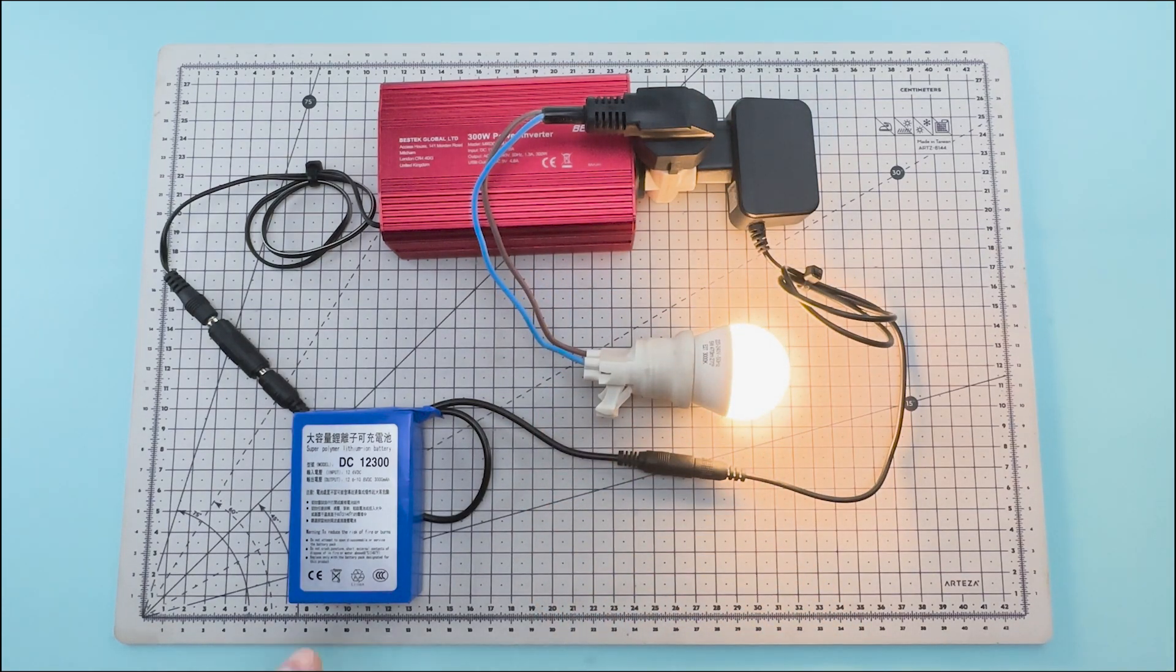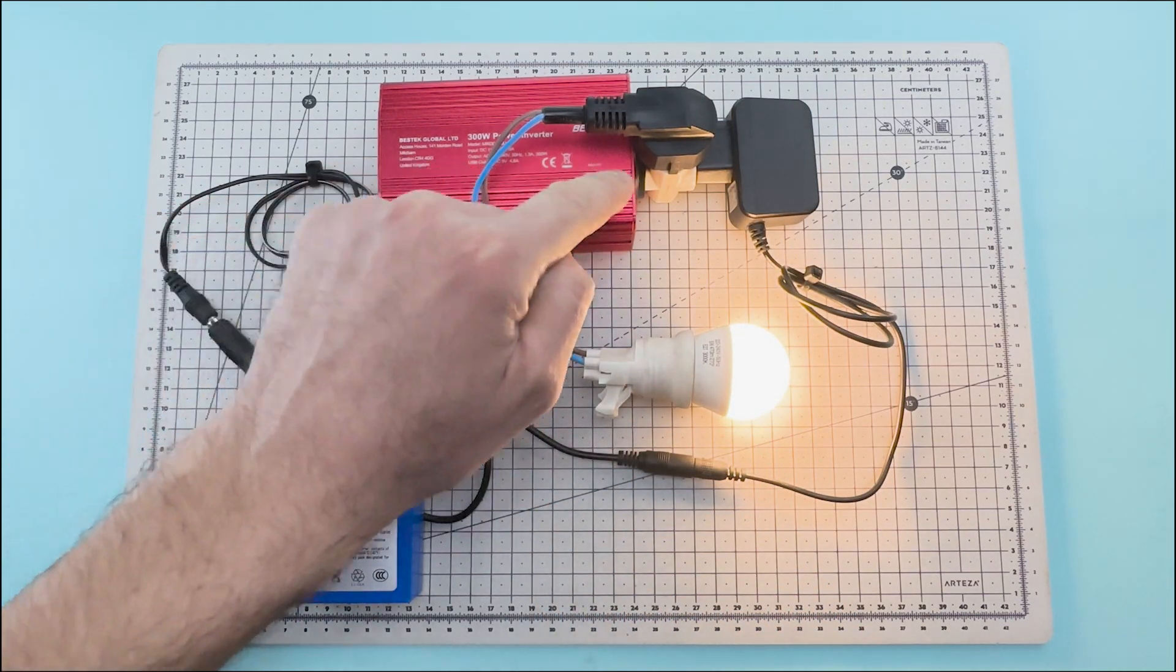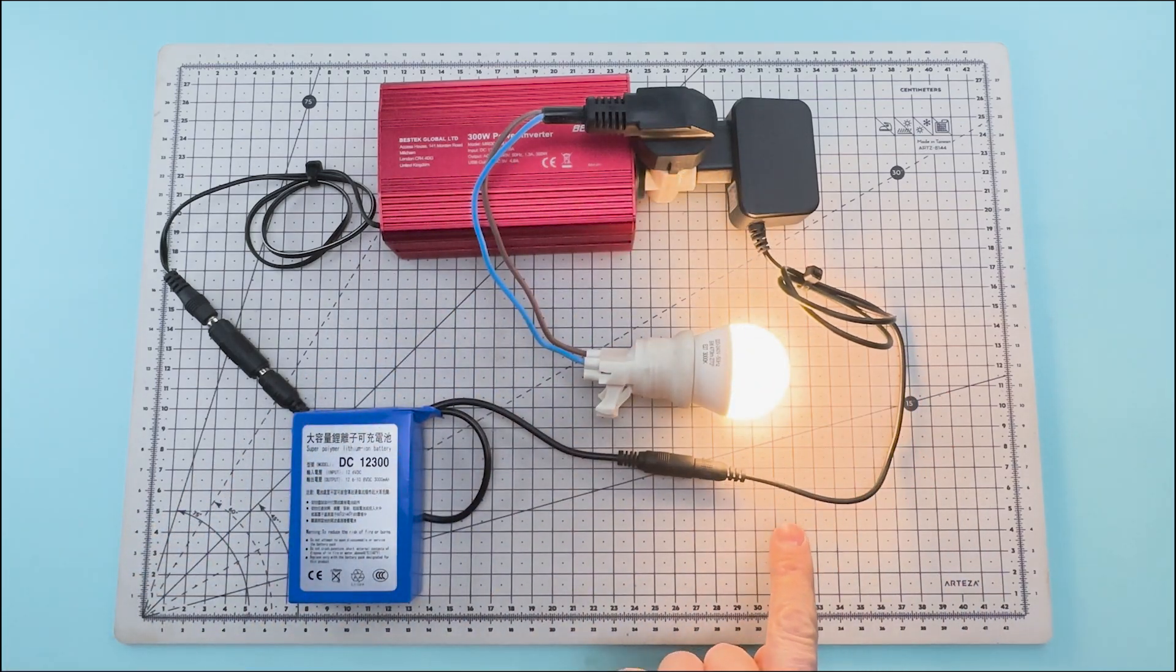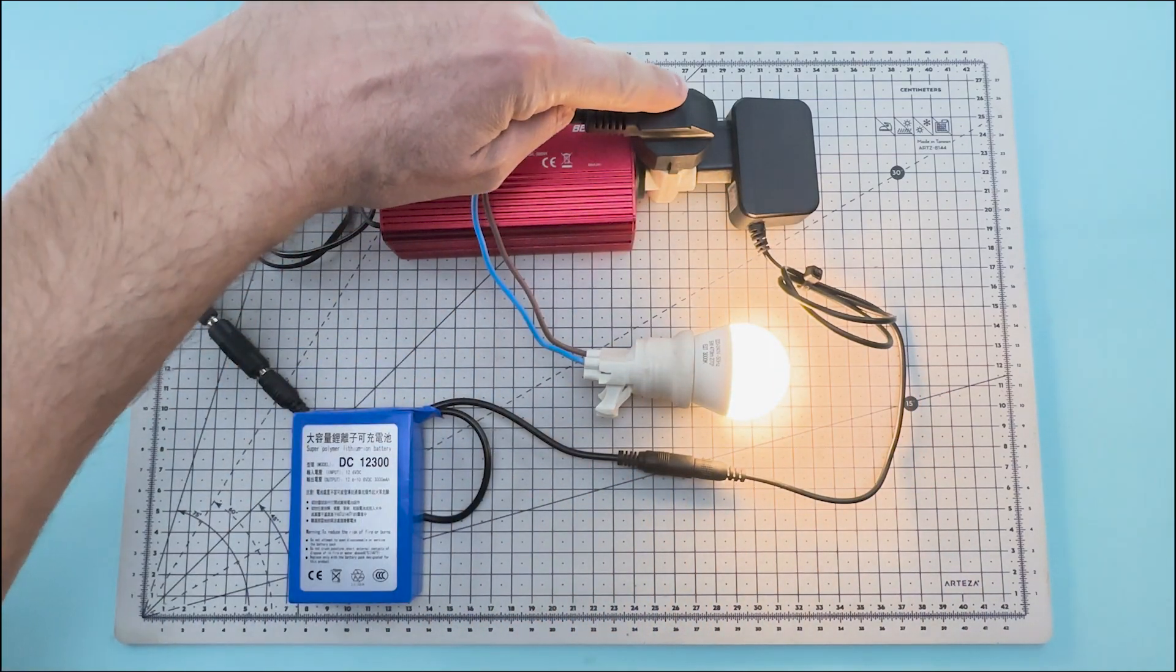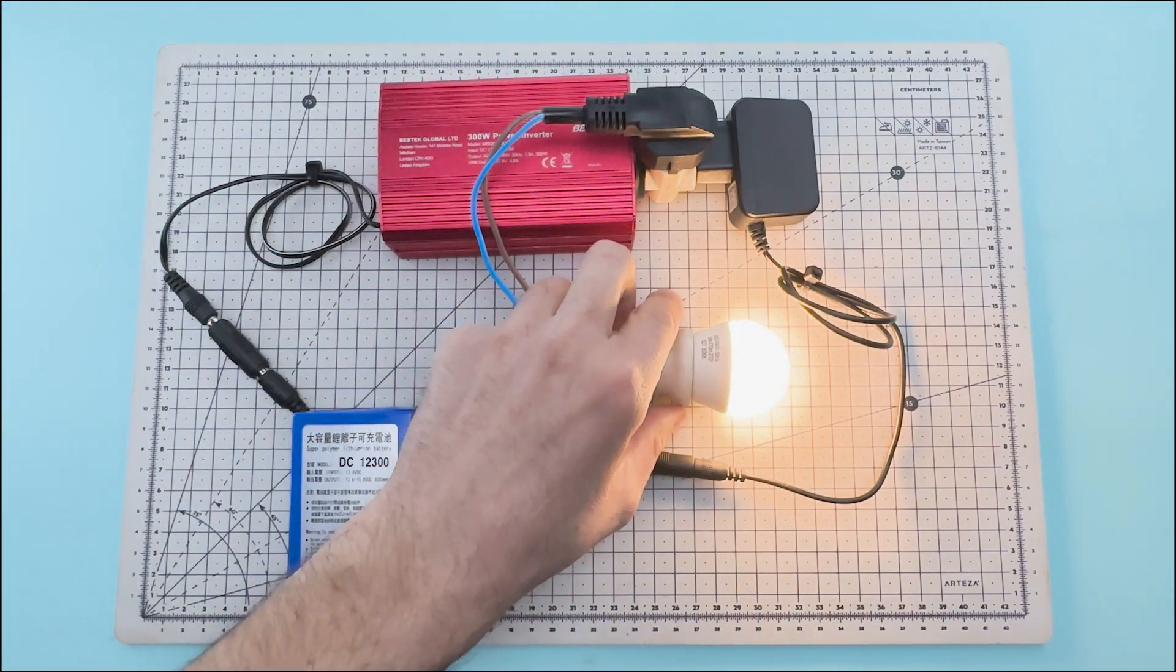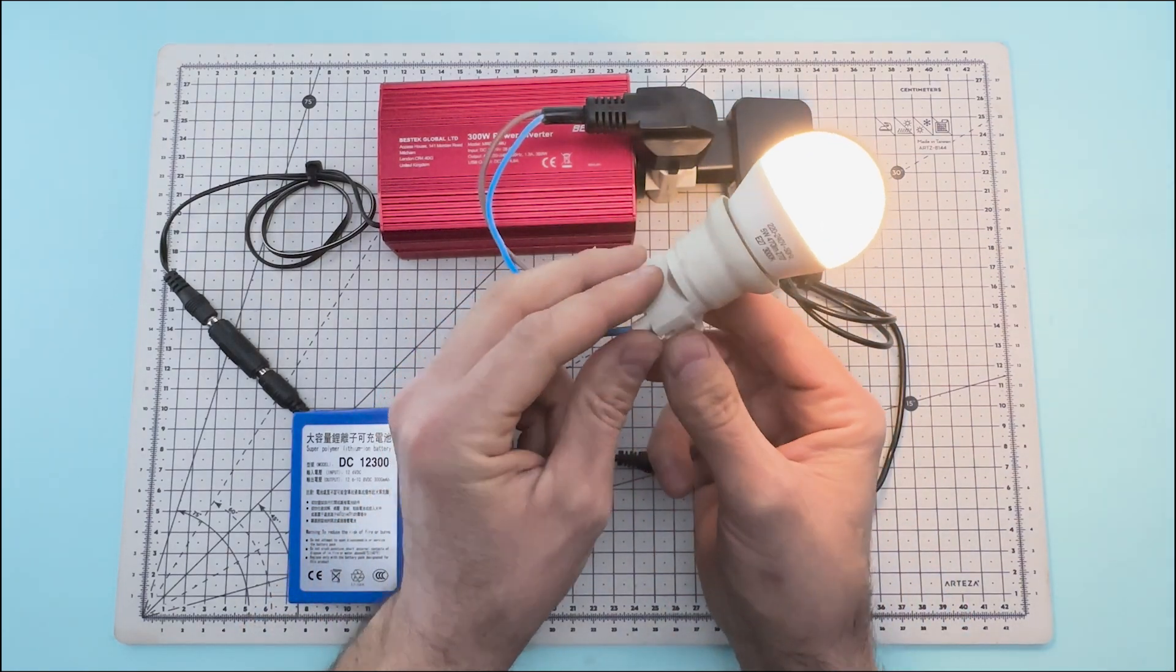The battery powers the inverter. The inverter transforms the current to 220 volts, and it is transformed back to 12 volts to recharge the battery. Plus, we have surplus energy that we use to power the light bulb.